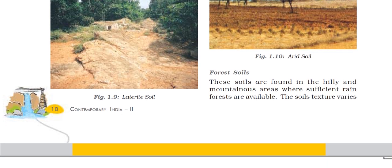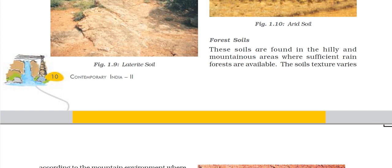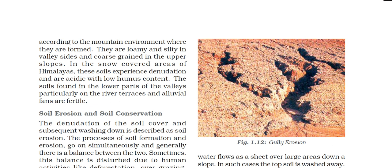Forest soil is found in hilly and mountainous areas where sufficient forest is available. The soil's texture varies according to the mountain environment and where it is formed. It is loamy and silty in valley sides, and coarse-grained in the upper slopes. In the snow-covered areas of the Himalayas, soil experiences denudation and is acidic with low humus content. Soil found in lower parts of valleys, particularly on river terraces and alluvial fans, is more fertile.